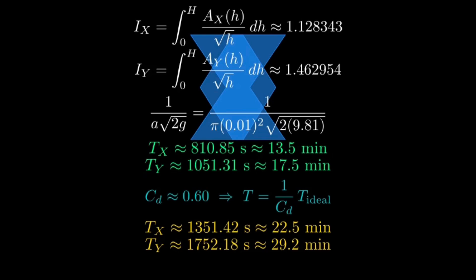With a more realistic discharge coefficient of 0.6, we multiply times by 1 over C sub D. So T sub X is about 1351.42 seconds, which is about 22.5 minutes. T sub Y is about 1752.18 seconds, about 29.2 minutes.